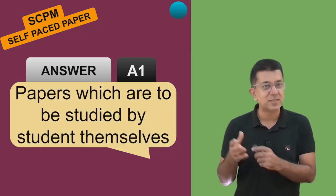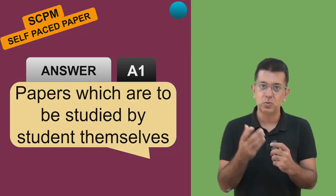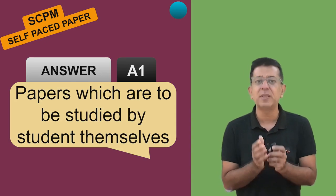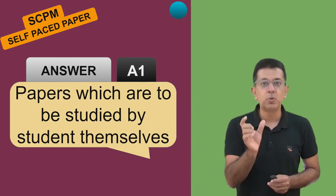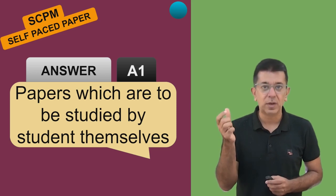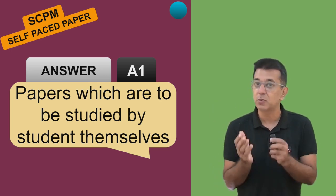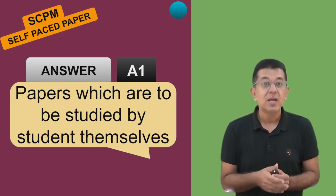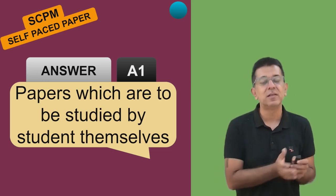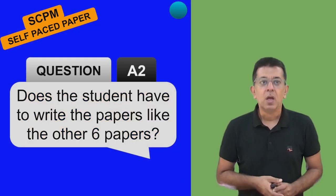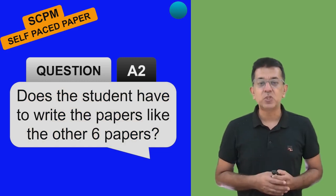These papers are to be done by the students themselves. The pattern of these papers is different and the marks of both papers will not be counted in the other six papers. So now you are going to be getting marks out of 600 in your final attempt, not out of 800 as was earlier the case.